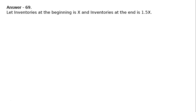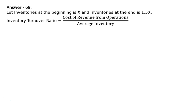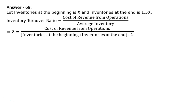Let inventories at the beginning be x and inventories at the end be 1.5x. The inventory turnover ratio is equal to cost of revenue from operations divided by average inventory. The inventory turnover ratio given in this question is 8 times. So, 8 equals cost of revenue from operations divided by inventories at the beginning plus inventories at the end, whole divided by 2, which is average inventory.